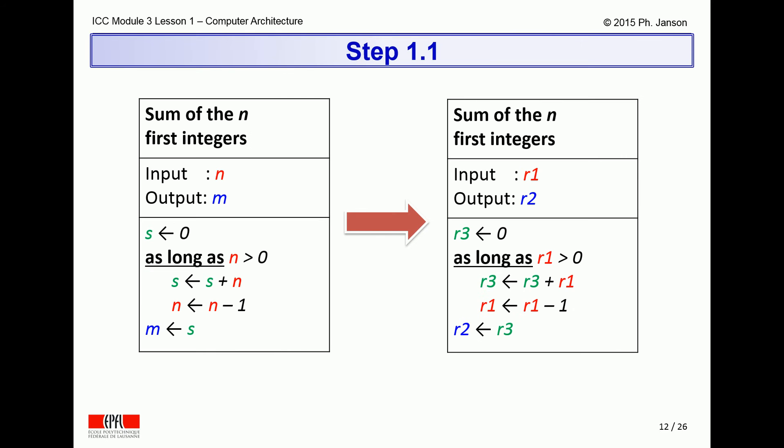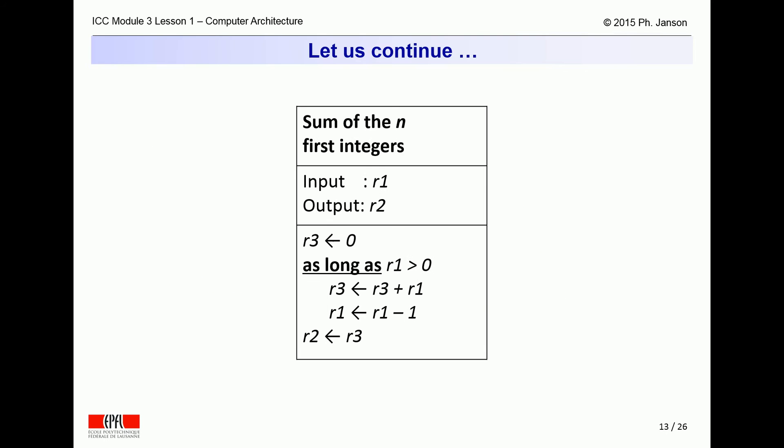And to be executable on computers, algorithms need to refer to such numbered registers rather than to any freely named variables. This way, the rewritten algorithm now looks as the right side of this slide. This is, however, not sufficient for a computer. It must also be possible to tell a computer that it needs to assign to registers values of other registers or fixed values called constants.